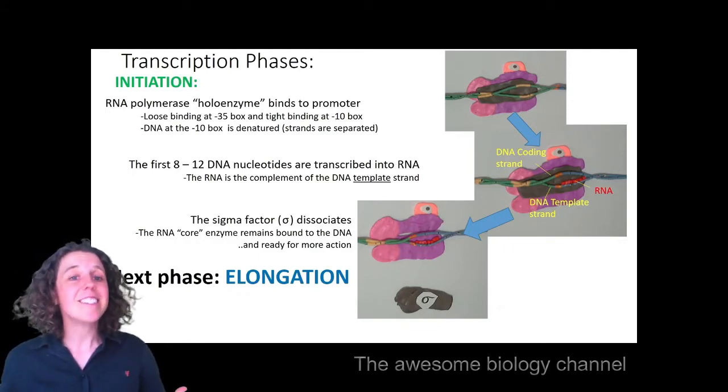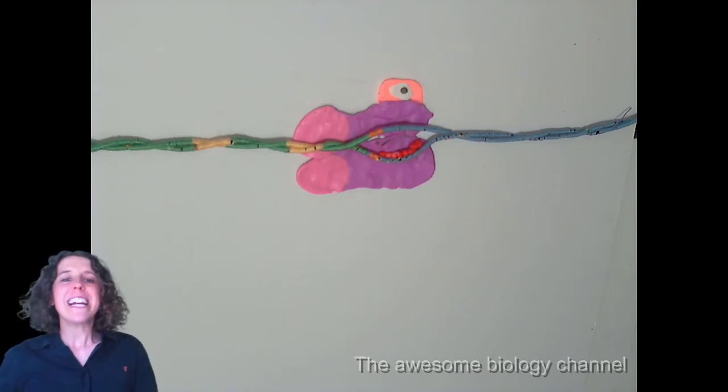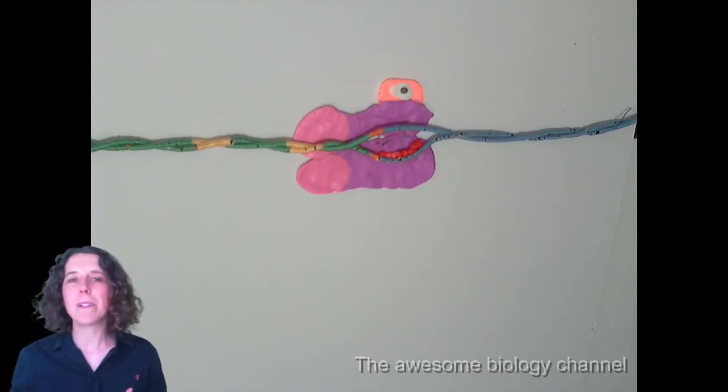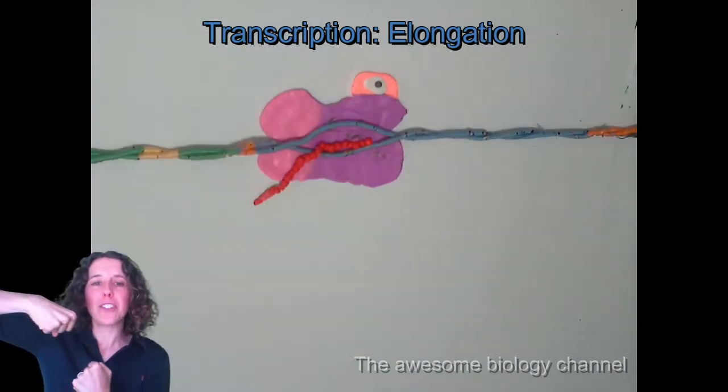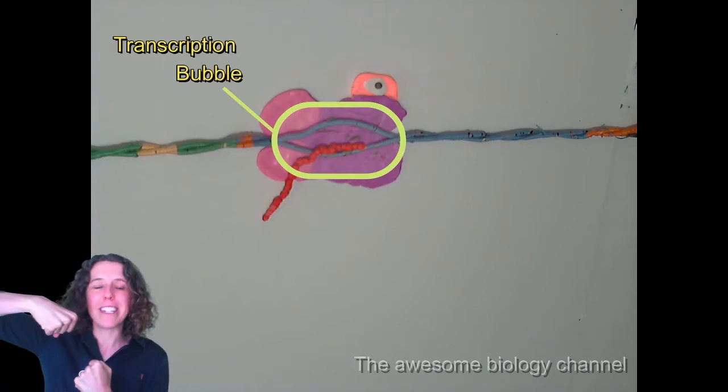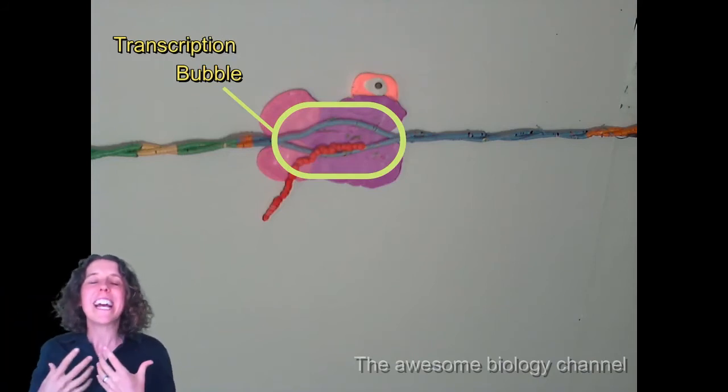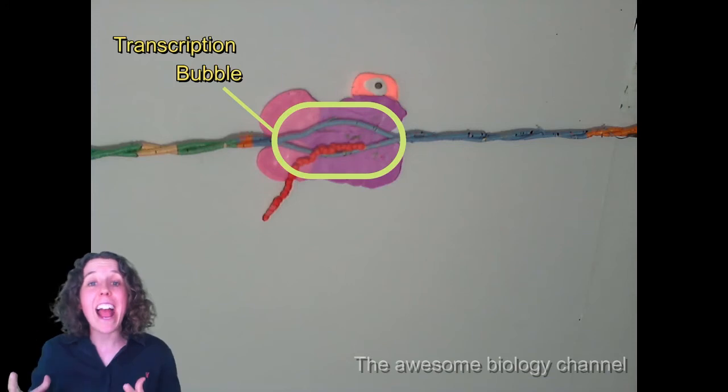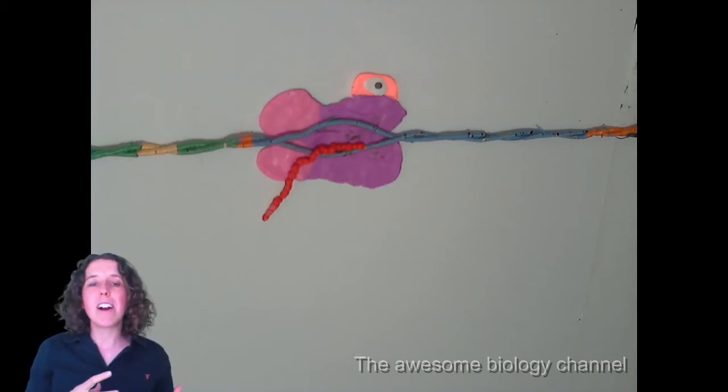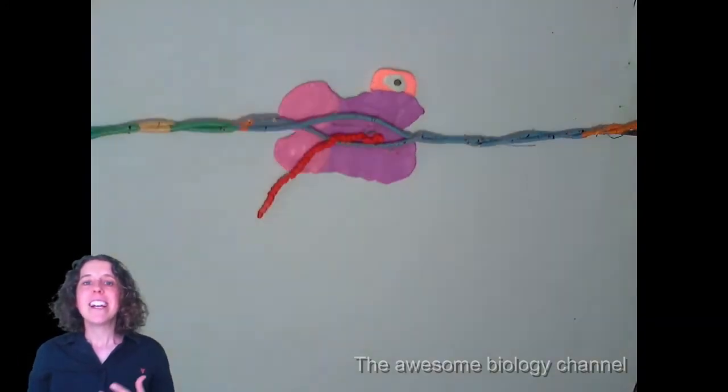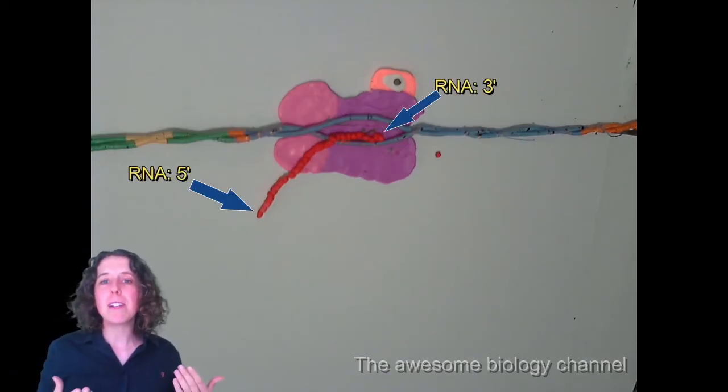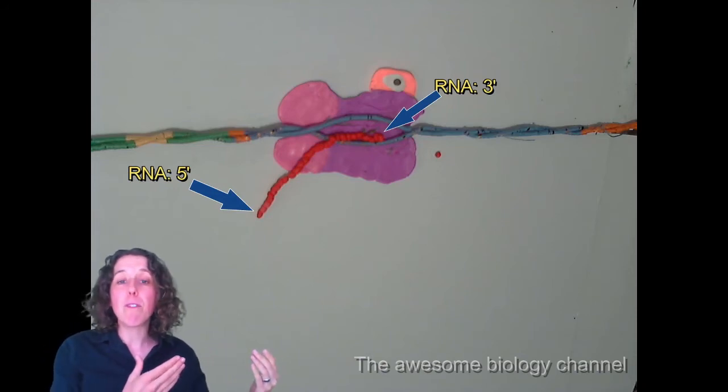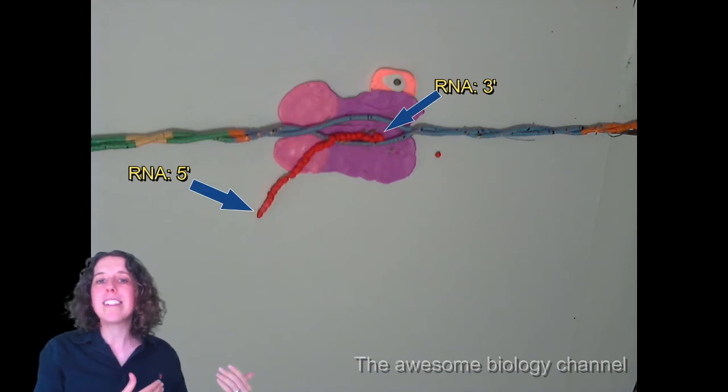And then the next phase is elongation. So in elongation, we've got our RNA core polymerase enzyme, he's there on that DNA region. He's pulled apart the two strands inside his body, this makes a transcription bubble, and this is where that enzyme is going to be working to add those bases to a growing RNA transcript. See how they're coming in there, but that RNA is directional. That 3' end of RNA, it's always going to be at the front end of that elongating strand, and that's always going to be where those bases get added to.